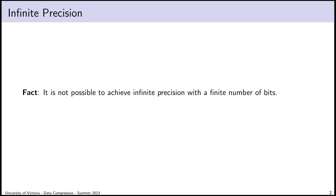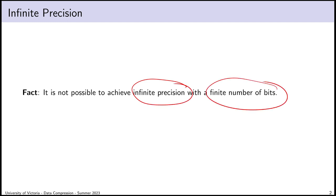Well, first — sorry about the clickbait title — but that's not possible. You can't store an infinite amount of information using a finite number of bits. That is impossible. Which means if we want to implement arithmetic coding on a computer, we're going to have to make some form of compromise. The point of this lecture is to show that such a compromise is possible, and that we can make compromises that don't affect the correctness of the algorithm.